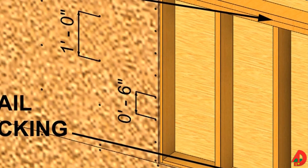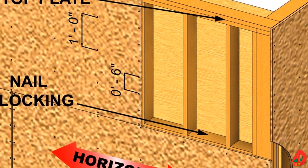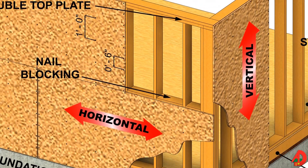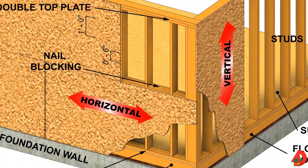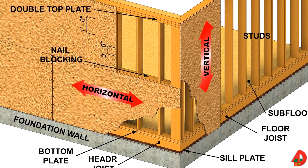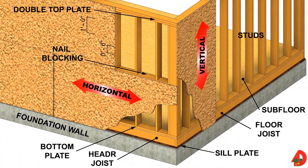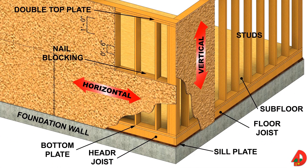When placing wall sheathing panels, ensure the first panel is plumb along its vertical edge and level along the horizontal edge. Panel sheathing may be applied when a wall has been squared and is lying on the subfloor. However, problems can occur after the wall is raised if the floor is not level. Builders often prefer to place all panels after the building has been framed.